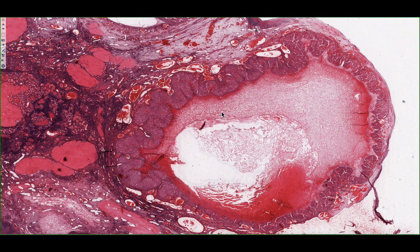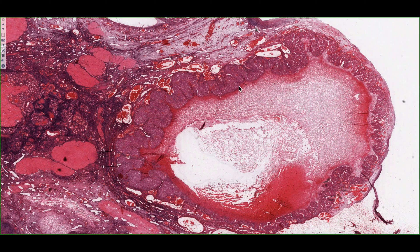The corpus luteum is now a temporary gland, and we can see around the circumference of this corpus luteum we have these invaginations that are actually trying to establish a blood supply, because the cell types that are found within these bands are going to be secreting hormones.